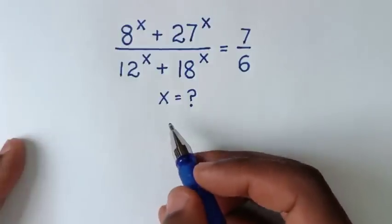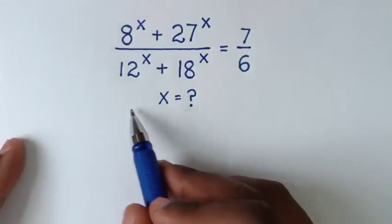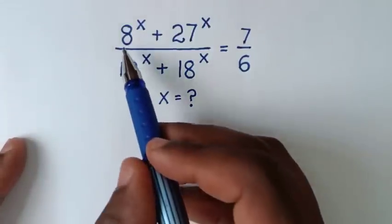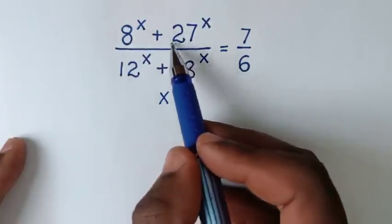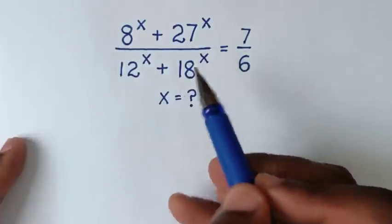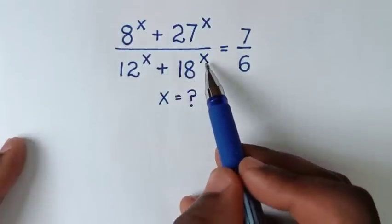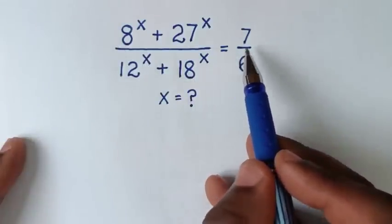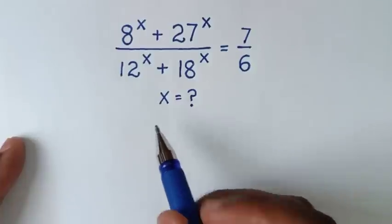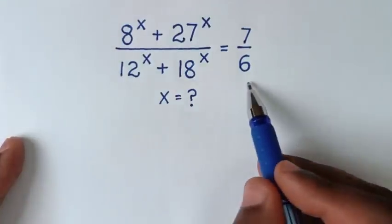Hello, you are welcome. Solve this math problem: (8^x + 27^x) / (12^x + 18^x) = 7/6. We need to find the values of x from this equation.